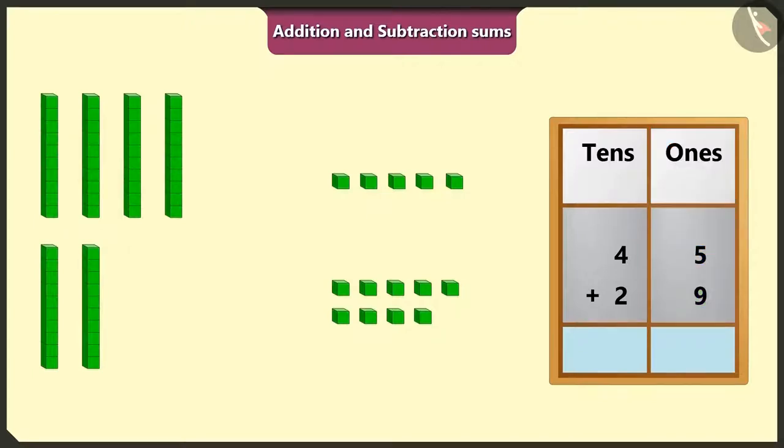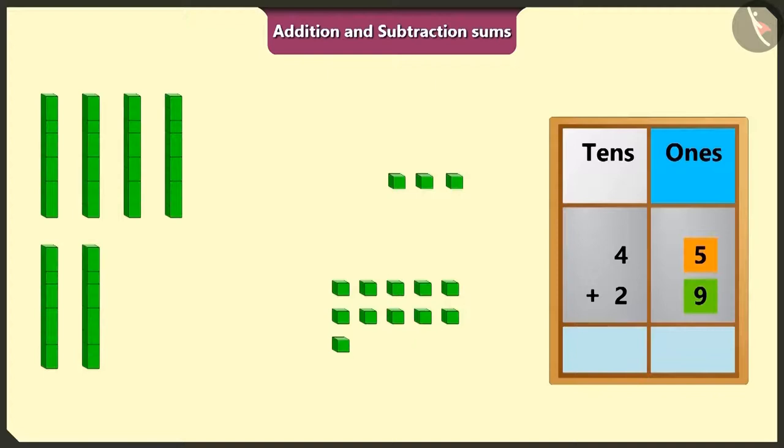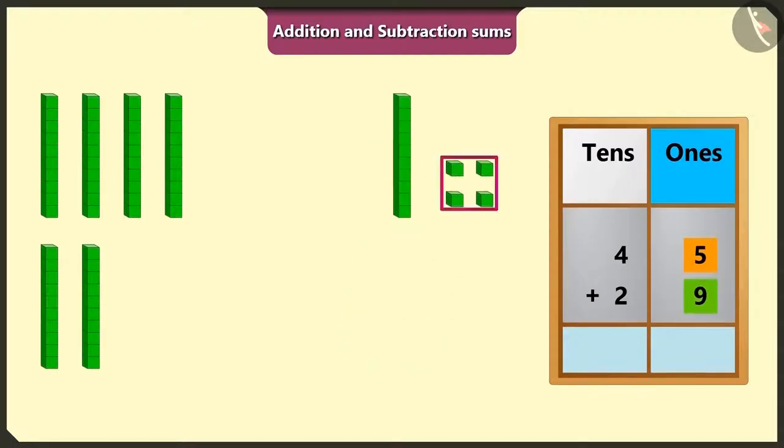Here, if we will add 5 ones to the bigger number 9, after 9 it will be 10, 11, 12, 13 and 14. There are 4 ones and 1 ten in 14. So, we will write 4 in the place of ones and carry over 1 in the place of tens at the top.